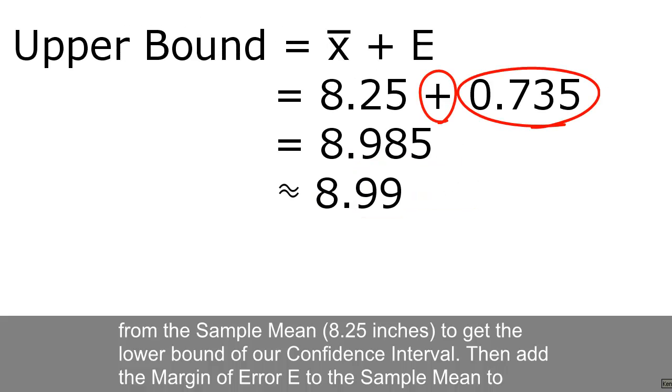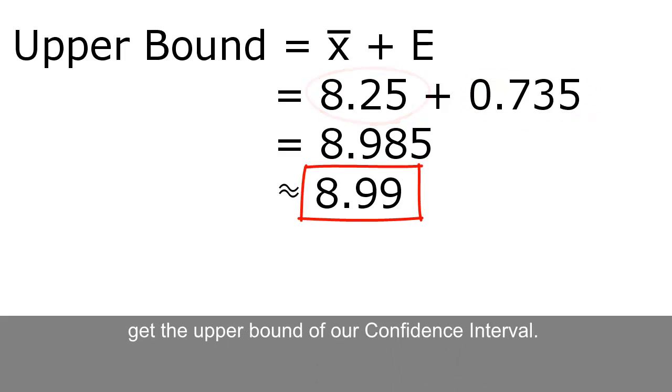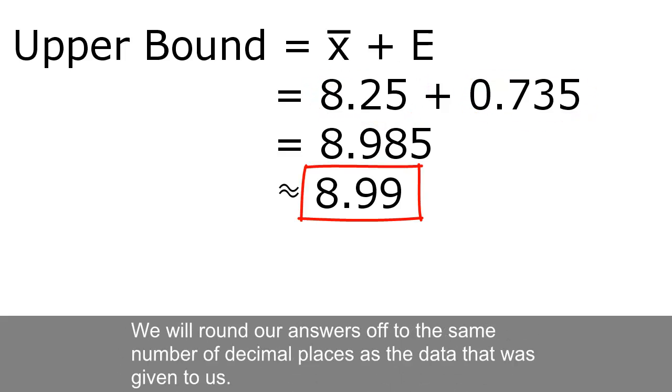Then add the margin of error E to the sample mean to get the upper bound of our confidence interval. We will round our answers off to the same number of decimal places as the data that was given to us.